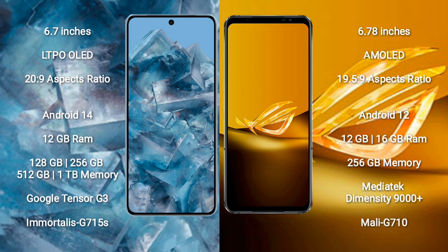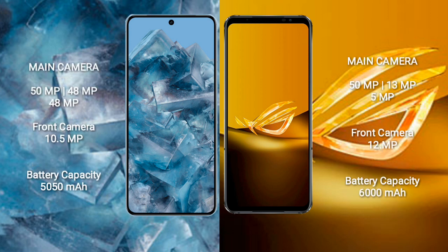The Google Pixel 8 Pro features a rear triple camera setup of 50 MP plus 48 MP plus 48 MP, and a front camera of 10.5 MP. The ASUS ROG Phone 6D has a triple camera setup of 50 MP plus 13 MP plus 5 MP, and a front camera of 12 MP.